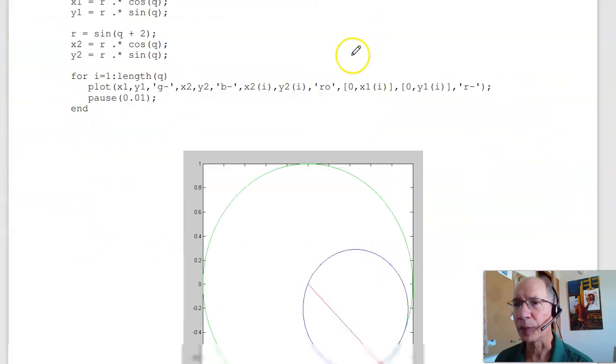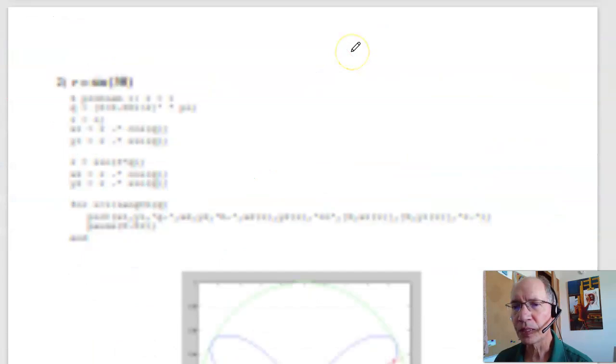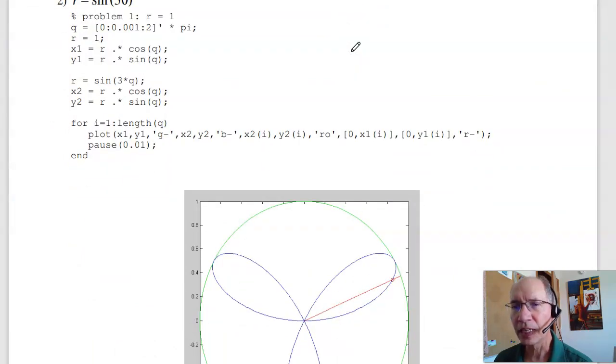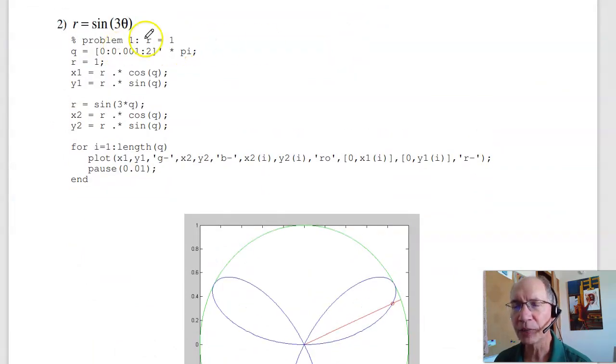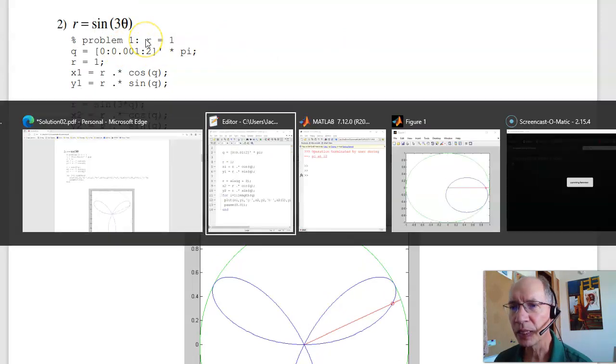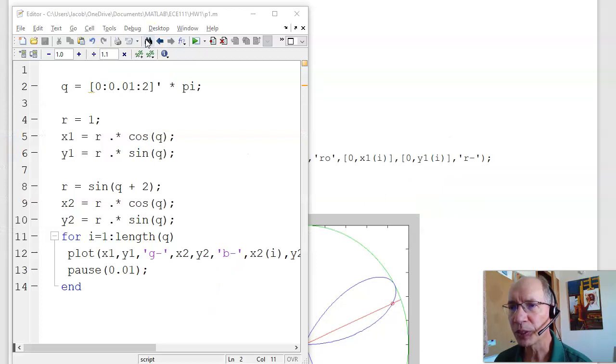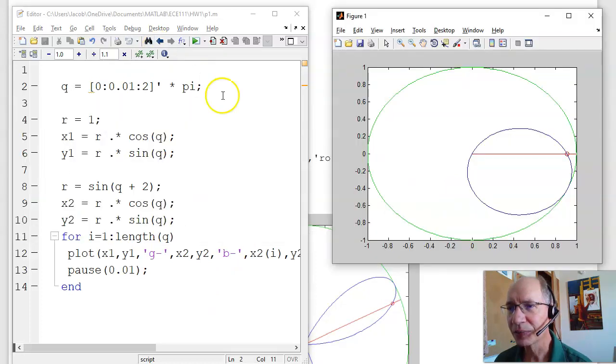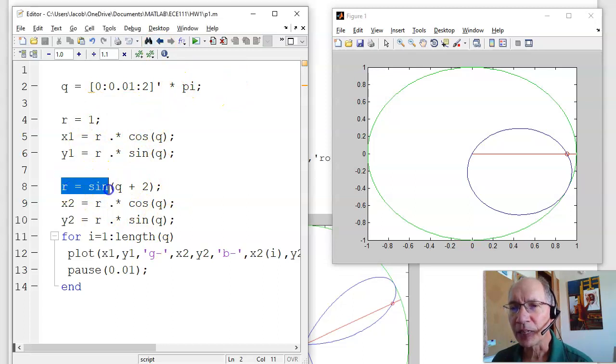So that's the first problem. The second problem is change it to being sine of three theta. Now this is where scripts are really useful. In MATLAB, you've got scripts or functions. We're starting out with scripts. I've got the script right here. I can modify it. Here's my function. If I want to change it to three times theta, I can keep the rest of the script.